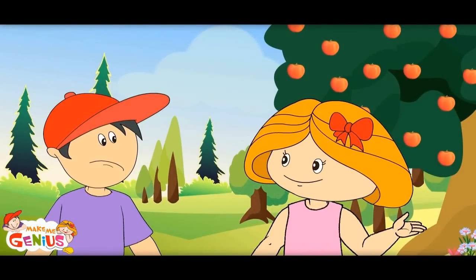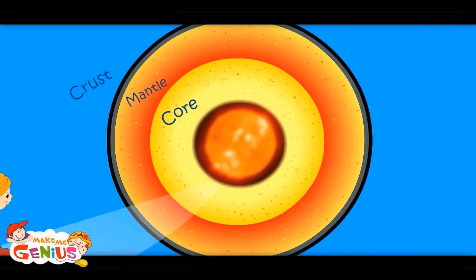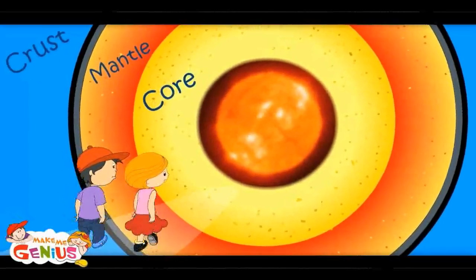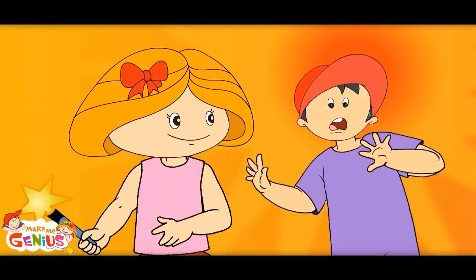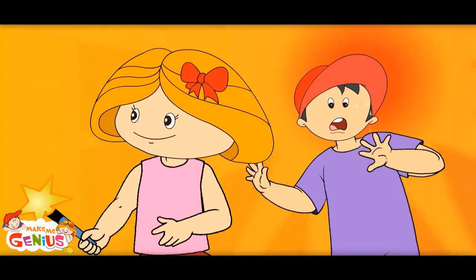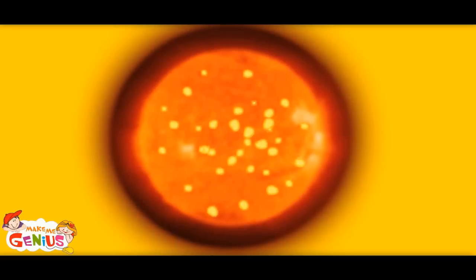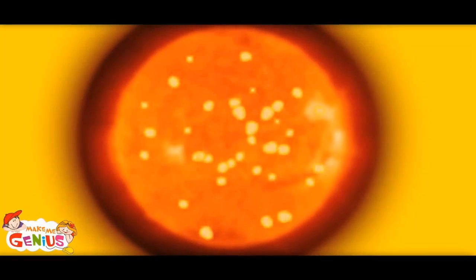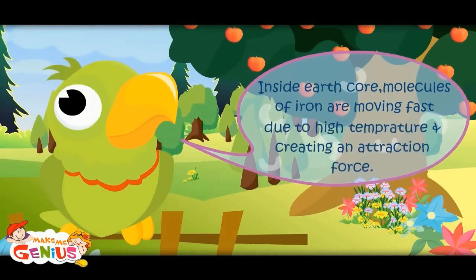We will have to go to the Earth's inside. Have a look. This is Earth from outside. Earth is divided into three parts: crust, mantle, and core. We have crossed Earth's crust and now we are passing through the mantle. It is very hot in here. In the core of the Earth it is very hot, and there is a lot of iron. Because of high temperature, the molecules in iron move very fast. The movement of these molecules causes the attractive force, which is called magnetism. Inside Earth's core, molecules of iron are moving fast due to high temperature and creating an attraction force.